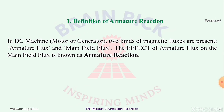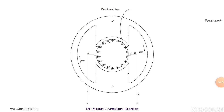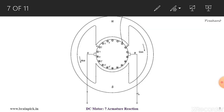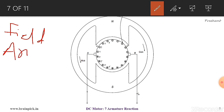First point: definition of armature reaction. In a DC machine, that is motor or generator, two kinds of magnetic fluxes are present. Number one is armature flux and second is main field flux. The effect of armature flux on the main field flux is known as armature reaction. Now, what is main field flux and armature flux? The DC motor has two main parts: field and armature.